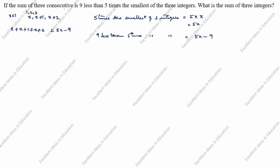So x plus x plus x gives 3x, and 3x plus 3 equals 5x minus 9. Bringing 5x to the left: 3x minus 5x equals minus 9 minus 3, and the 3 moves to the right as minus 3. Since minus 5x is the bigger term, we get minus 5x plus 3x equals minus 2x, equal to minus 12. Cancelling the negatives, x equals 12 divided by 2, which equals 6.